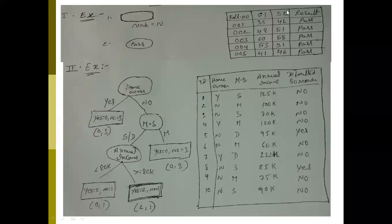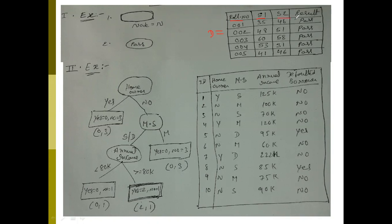In the first example, we have a training dataset d represented as a table. This training dataset has four attributes: role number, subject, subject one, and subject two. The result attribute is the target class.